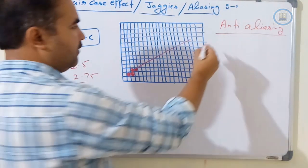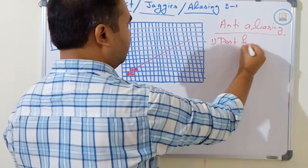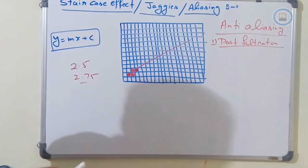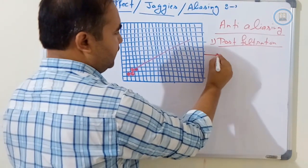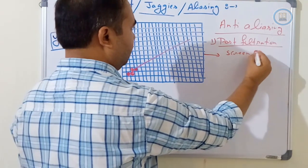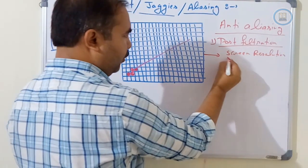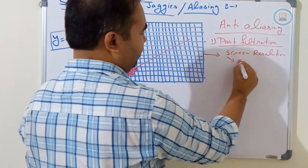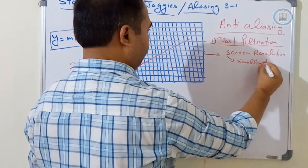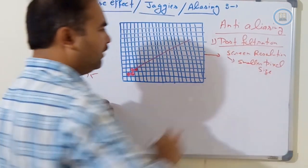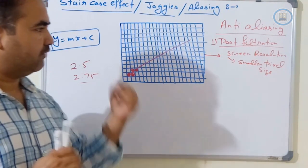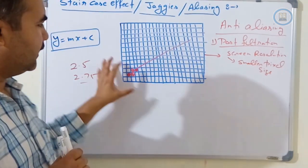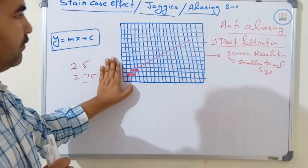The first method is called post-filtration. In this method, we increase the screen resolution — in other words, we decrease the size of the pixel, making it smaller and smaller. When the screen pixel size is reduced very small, or the screen resolution is increased, the aliasing effect becomes negligible.